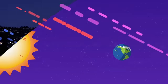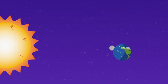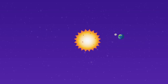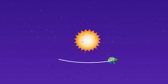As the Earth spins on its axis, it also orbits around the Sun. This movement is called revolution.